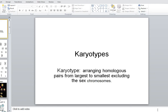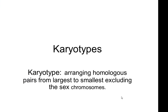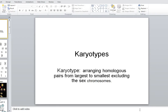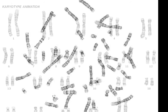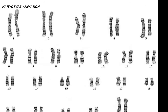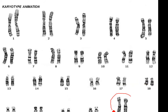So let's look at this — this is a karyotype. Your basic definition: arranging the homologous pairs from largest to smallest, excluding the sex chromosomes. Is this a male or a female? Here's the sex chromosome — it's got two X's. Chromosomes 1 through 22 have no bearing on your sex; it's the sex chromosomes that determine that.